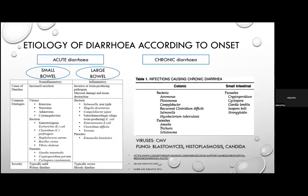Looking at the aetiology of diarrhoea by onset, you can assess whether it's acute or chronic, and then whether it's small bowel or large bowel diarrhoea to narrow the differential diagnosis. In acute diarrhoea, non-inflammatory diarrhoea mainly affects the small bowel with increased secretions.